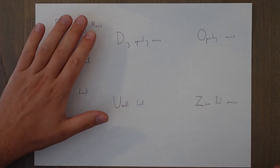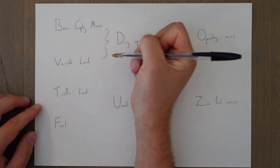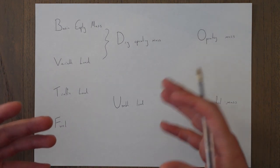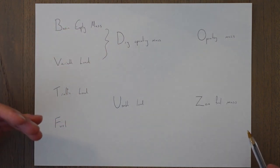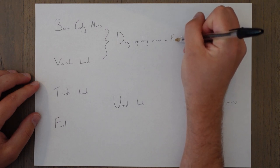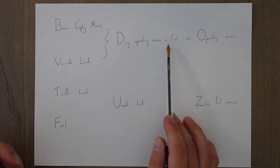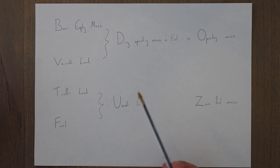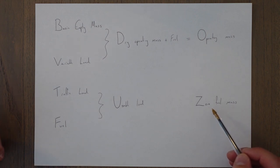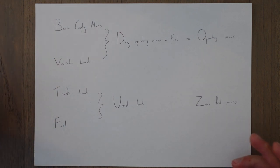We can group the components together in different ways. Our dry operating mass is the basic empty mass plus the variable load — think of it as what we need to fly the aircraft without any fuel. Add fuel and we get the operating mass, sometimes called the wet operating mass. The traffic load and fuel together are sometimes called the usable or useful load. The zero fuel mass is the all-up mass minus the fuel — simply these three components without any fuel.